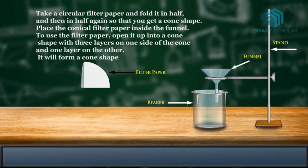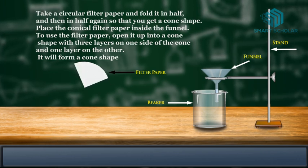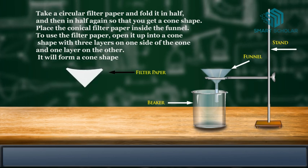To use the filter paper, open it up into a cone shape with three layers on one side of the cone and one layer on the other. It will form a cone shape.